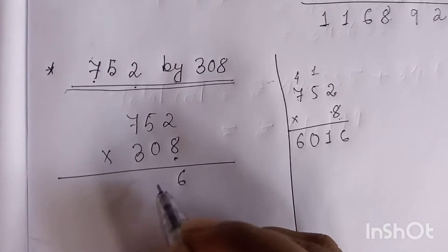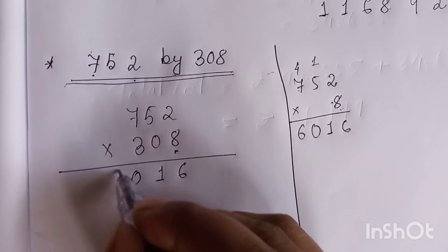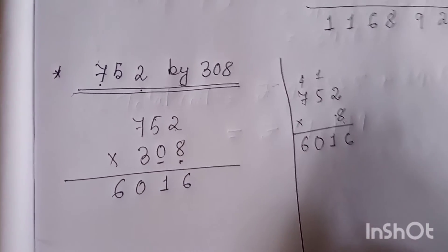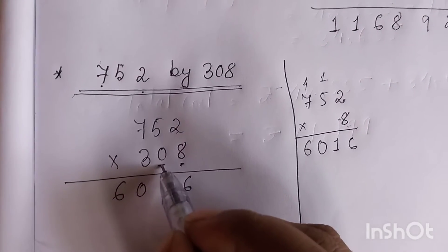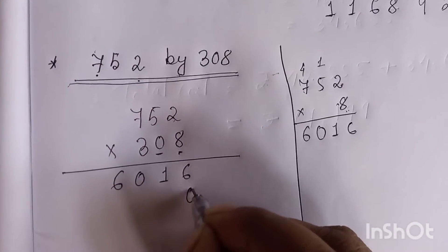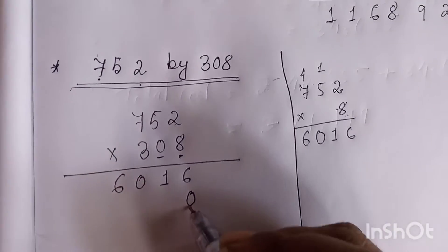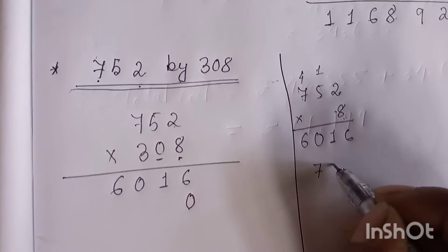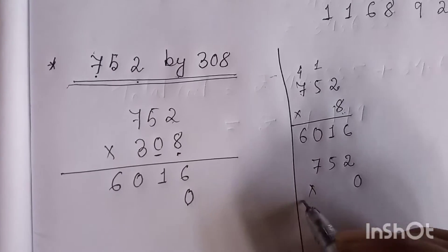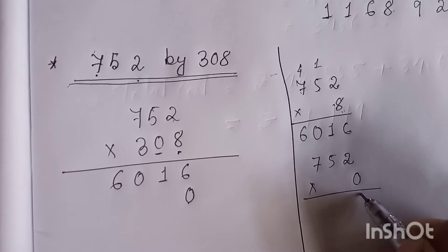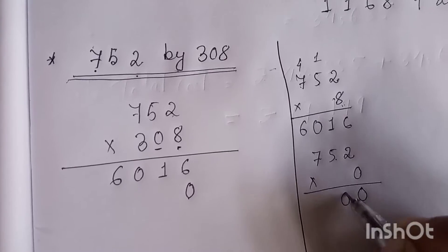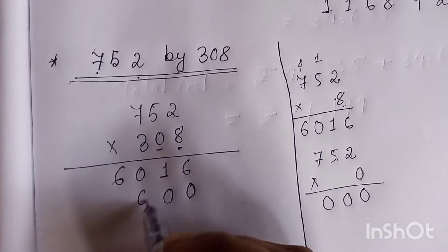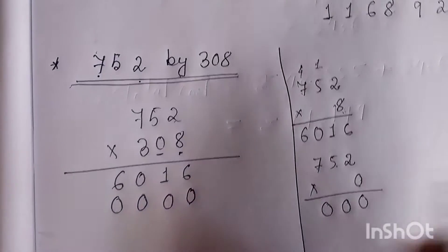The answer for the first part is 6,160. Now we multiply by zero, which is in the tens place, so we leave the ones place empty and put zero. Then multiply by zero: two zeros are zero, five zeros are zero, seven zeros are zero — all places remain zero.